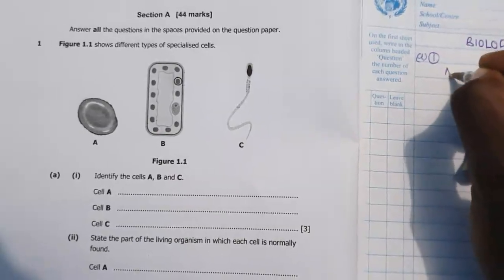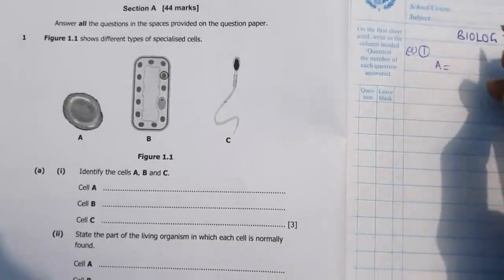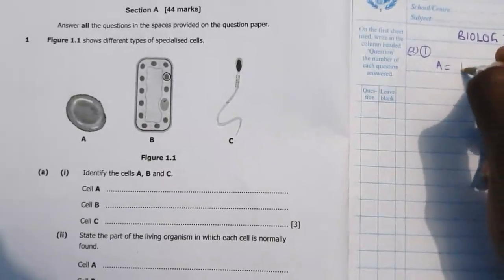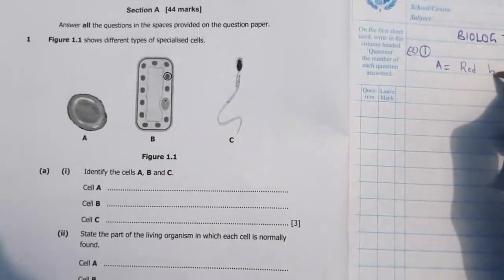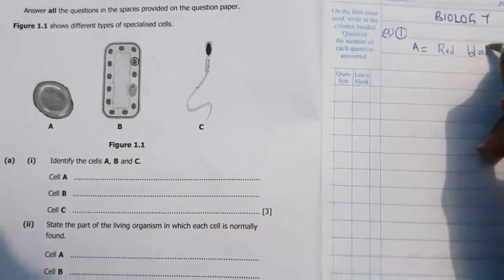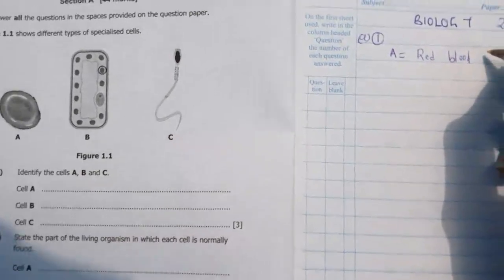So cell A, cell A is just the red blood water cell, red blood, the red blood cell.